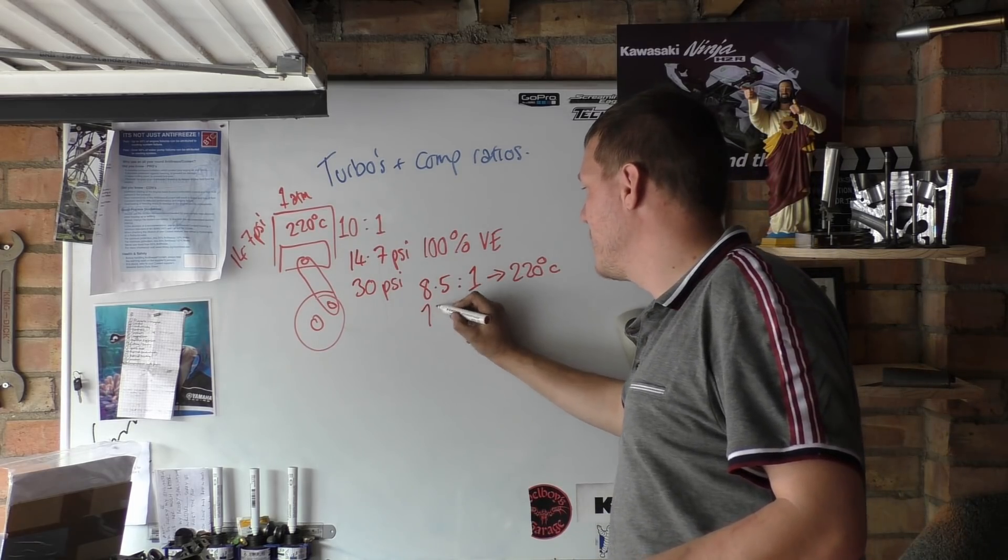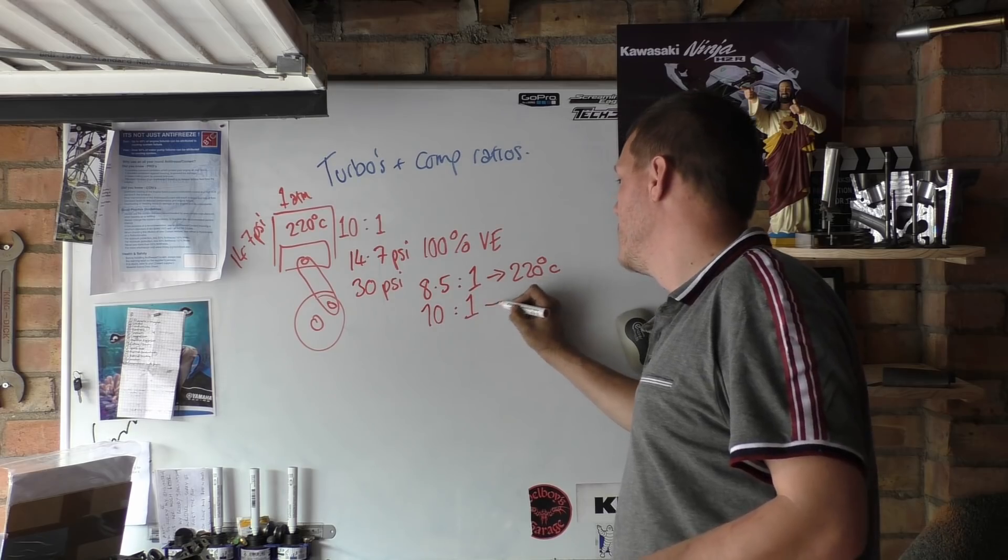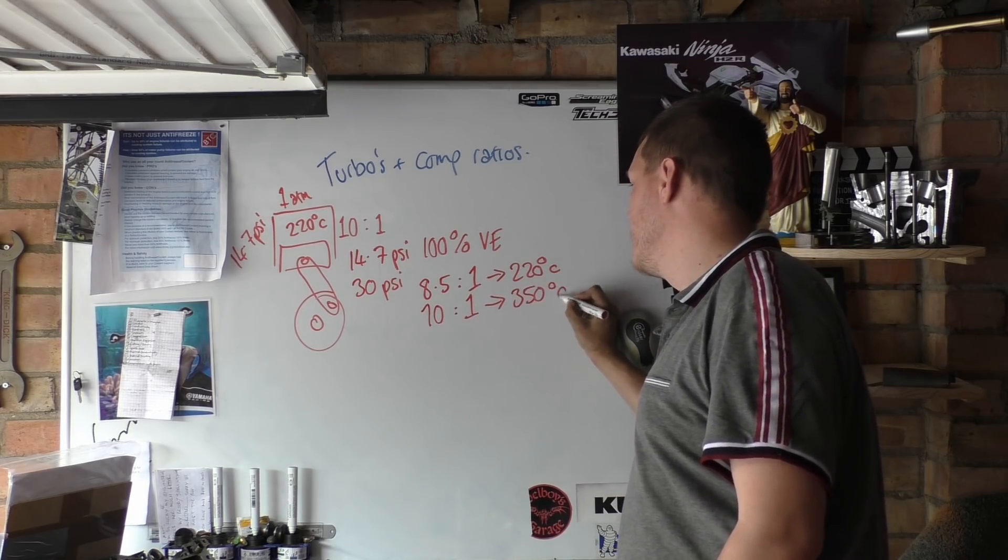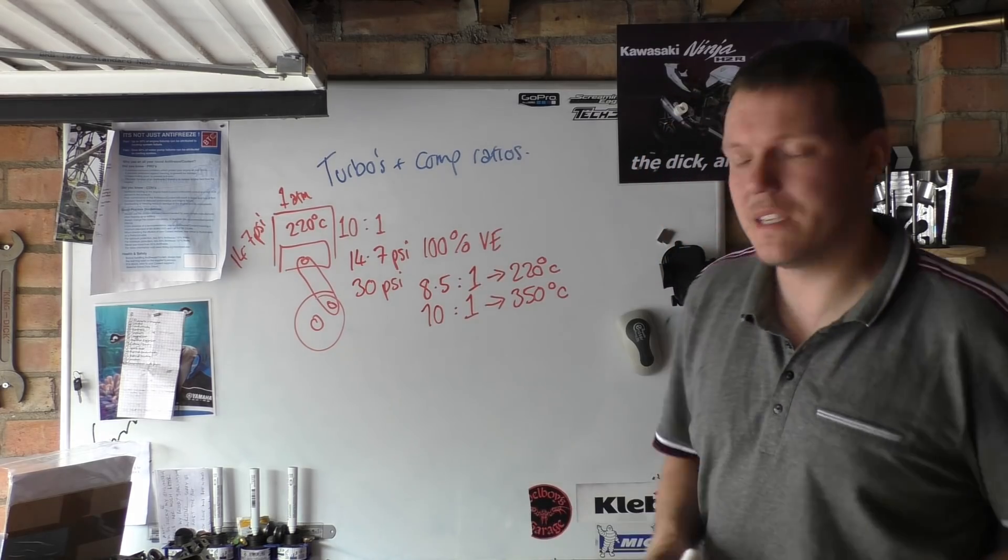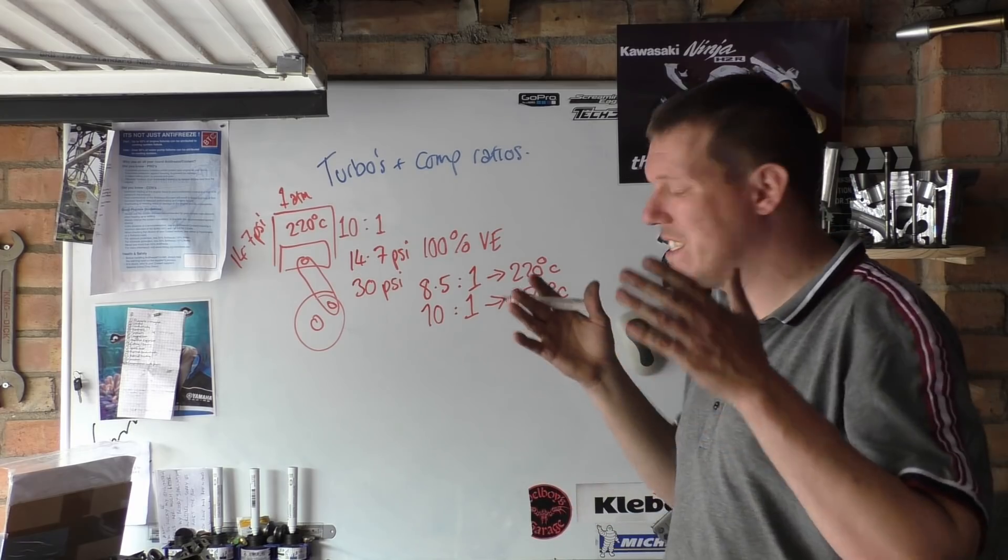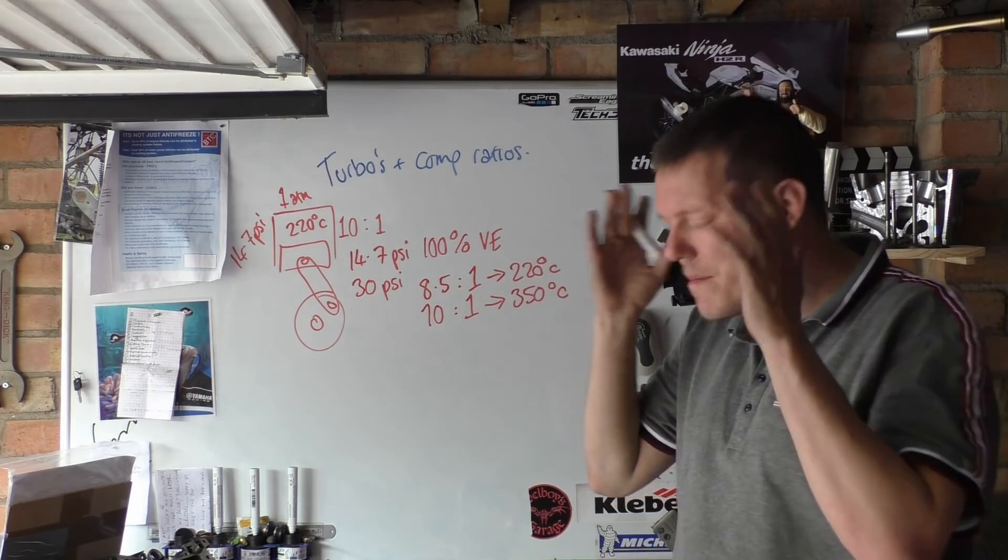So by the time we get to 10 to 1, our temperature let's say is 350 degrees C. That's it - it's above your auto-ignition temperature of your gasoline mixture. You are going to pre-ignite and detonate.